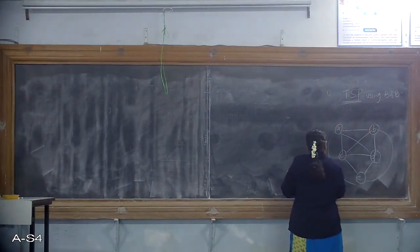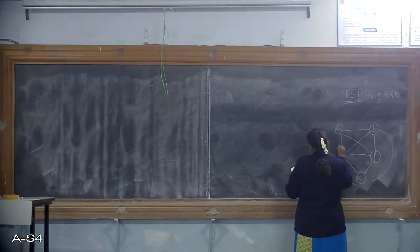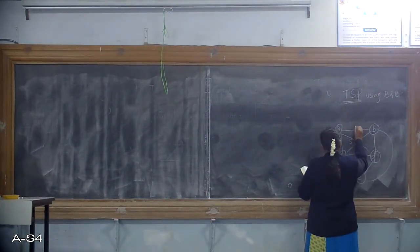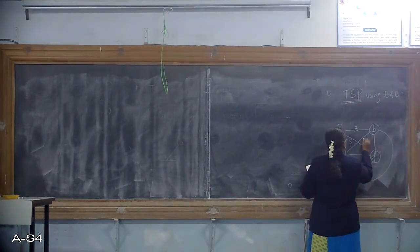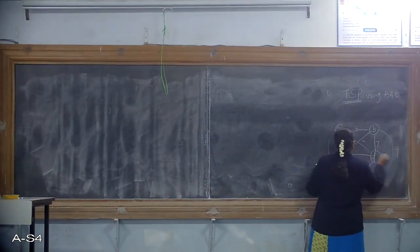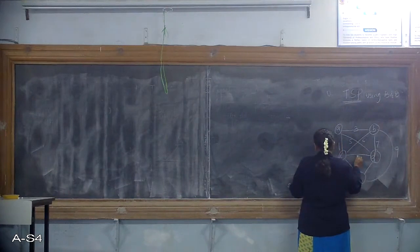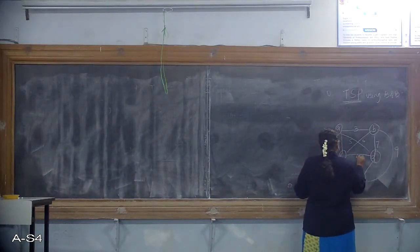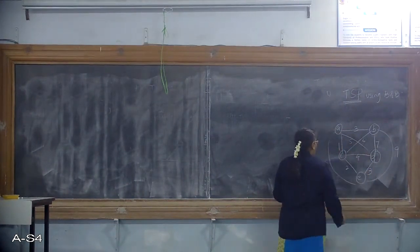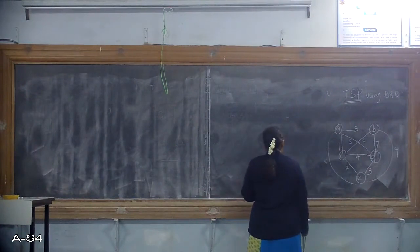The costs on the graph are: 8, 1, 5, 3, 6, 7, 9, 4, 2, and 3. This is the given graph for the Travelling Salesperson Problem.